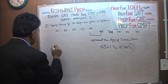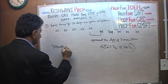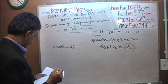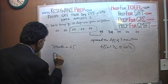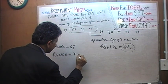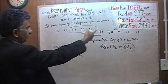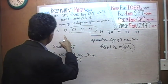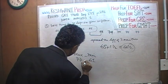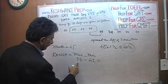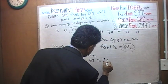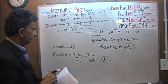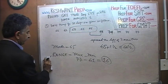The mode is of course the most commonly occurring number, which in this case is just 65. The range is simply the highest number minus the lowest. The highest is 77 and the lowest is 61, so 77 minus 61 gives us 16. That takes care of part A.